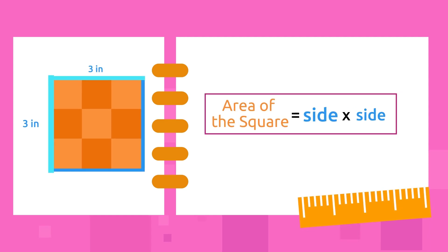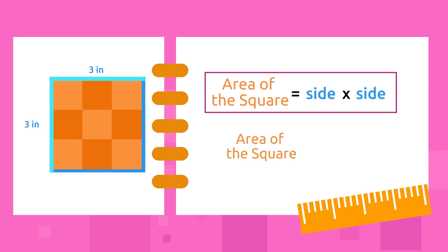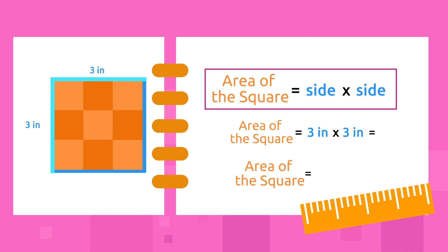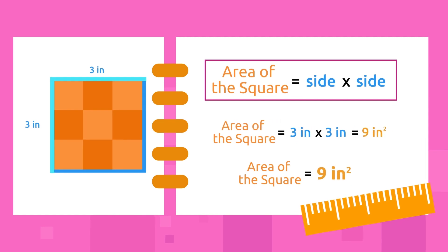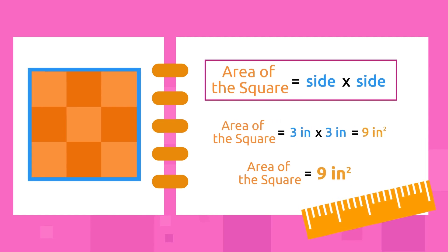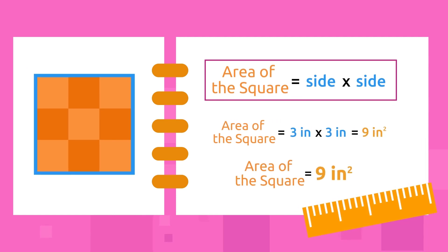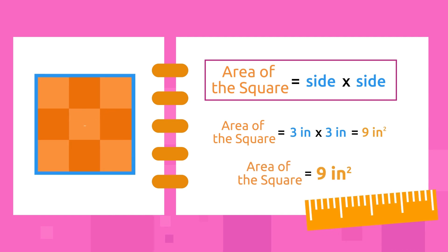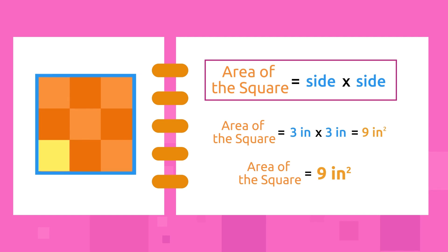The sides of this square measure three inches each. To find its area, we multiply one side by the other — meaning we multiply one side by itself. That is three times three, which equals nine. The area of this square is nine square inches. In this square, we can fit nine one-inch squares.